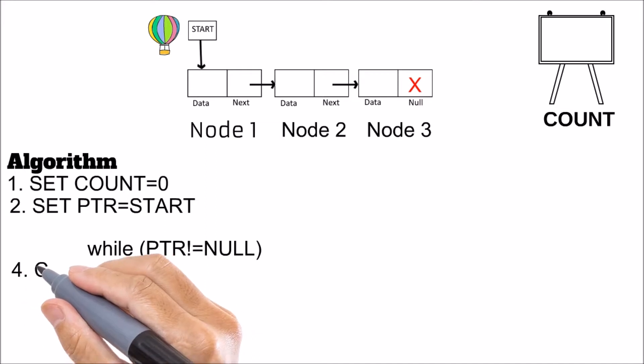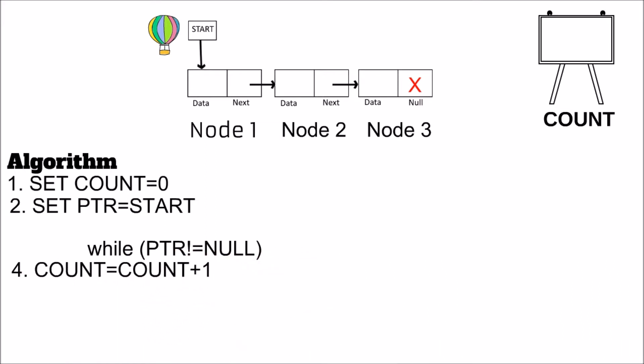So while PTR doesn't find null, that means PTR not equal to null, we will operate on the display board and increment the value of count.